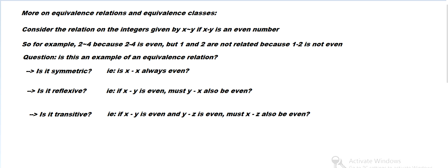Is it transitive? If x minus y is even, and y minus z is even, must x minus z also be even? That's what transitive would mean in this case. x is related to y, y is related to z.